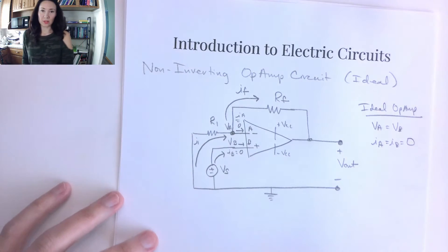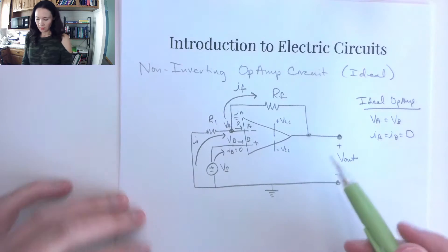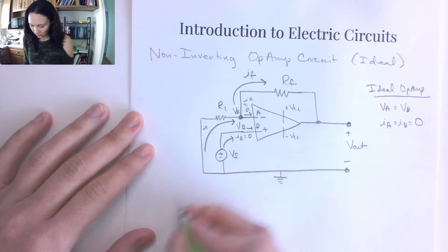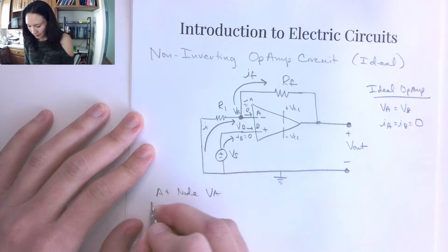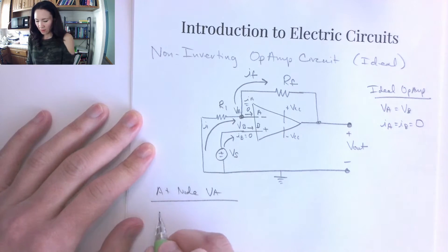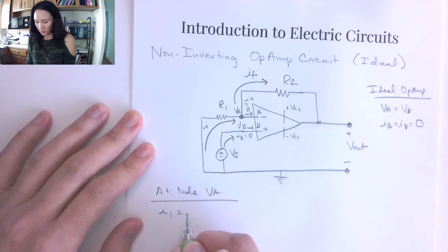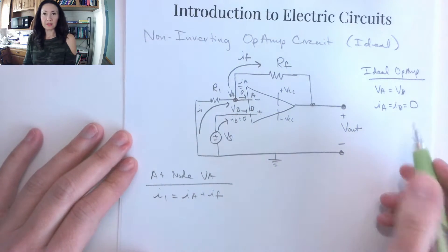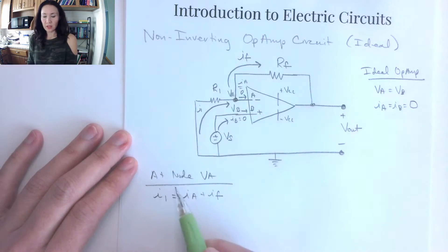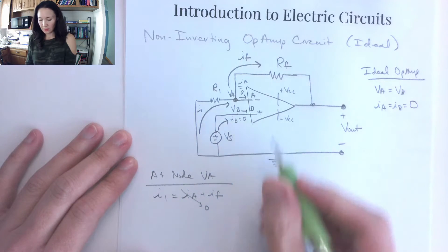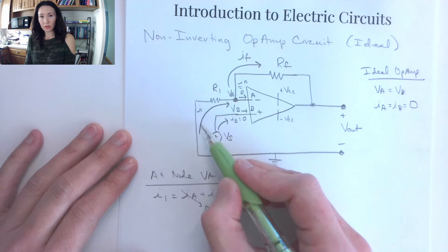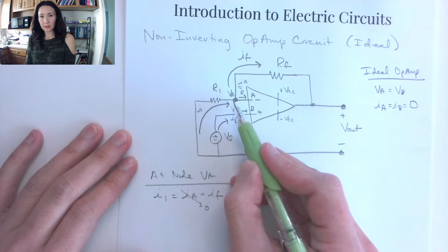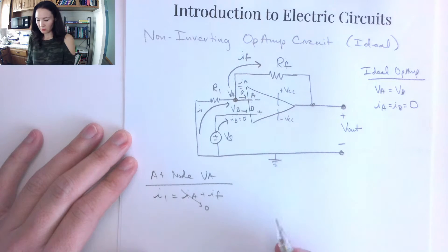We're going to use node voltages to solve this circuit. At node VA, by KCL, I1 equals IA plus IF. But by the ideal op-amp approximations, IA equals zero because no current takes that path. So all the current from I1 comes up and takes the path IF through the feedback resistor.